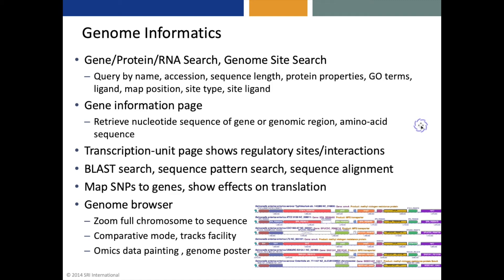The software can map SNPs to genes and show the effects on translation. There's a genome browser that lets the user zoom from the full chromosome to the sequence, with a comparative mode and a tracks facility. One can also paint omics data onto the genome, as well as generate a genome poster.